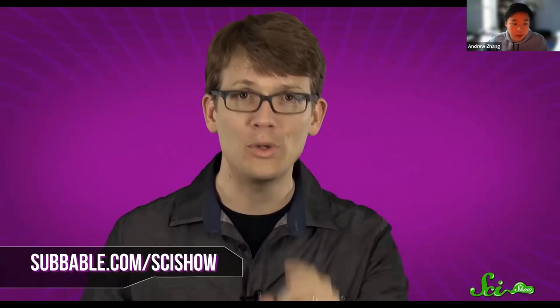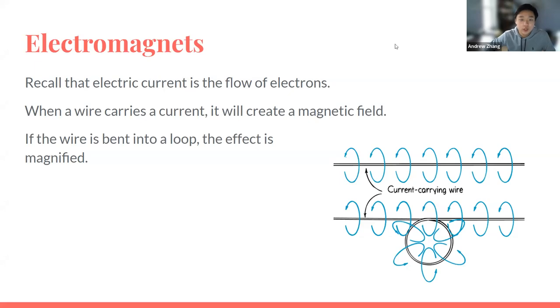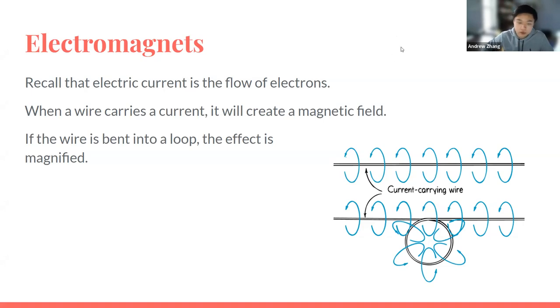Hopefully that video made sense — it's a pretty cool application of magnets. Now we'll move on to electromagnetism, taking the concepts we learned about electricity and combining them with what we just learned about magnetism. Recall that electric current is just a flow of electrons — a flow of negative particles through something like a wire.